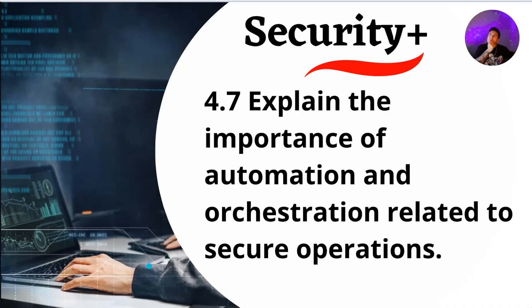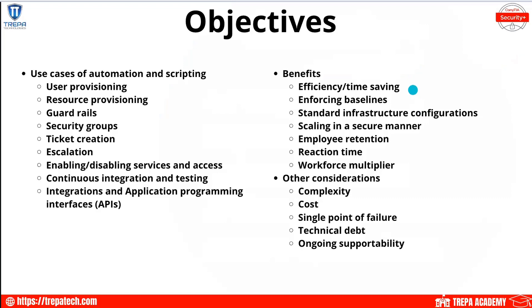Let's go over Domain 4.7 — explaining the importance of automation and orchestration related to secure operations. In this lesson we're going to cover two or three main objectives: use cases of automation and scripting, the benefits of orchestration and automation as it relates to security and availability, and other considerations when we want to implement automation and scripting.